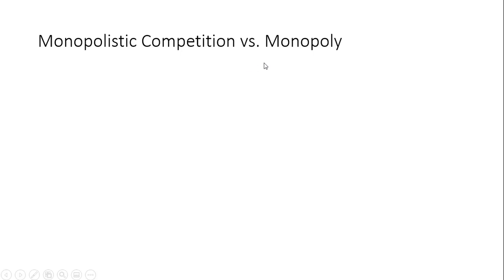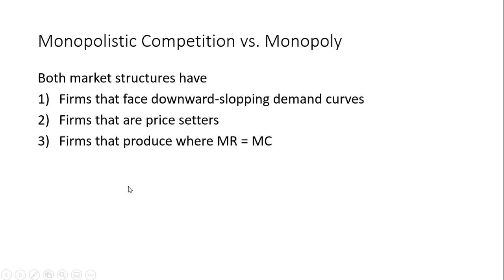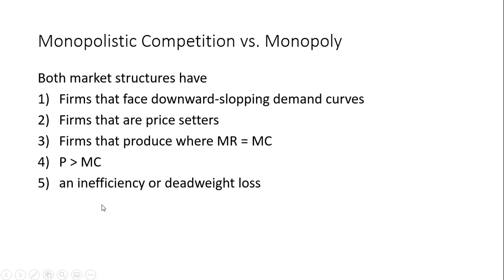Monopolistic competition versus monopoly: both market structures have firms that face downward-sloping demand curves for their product, both have firms that are price-searchers or price-setters, and both firms produce where marginal revenue equals marginal cost. Both firms will be in a situation where the price of the product exceeds the marginal cost of production, unlike in perfect competition where price equals marginal cost. In both market structures there will be inefficiency or deadweight loss — but with monopolistic competition, that inefficiency needs to be weighed against the benefit of product variety.